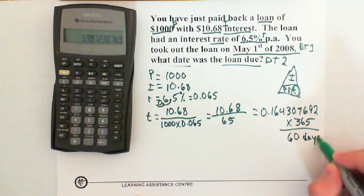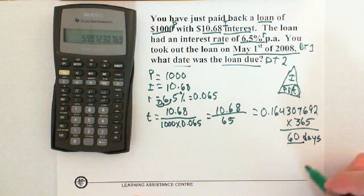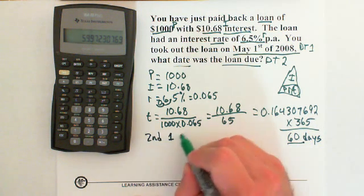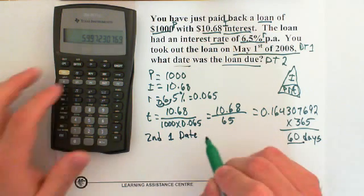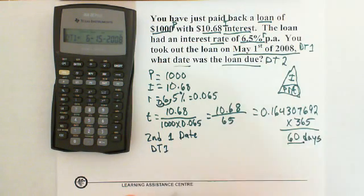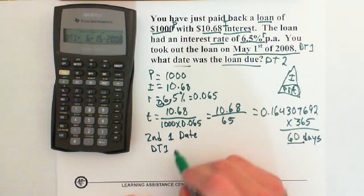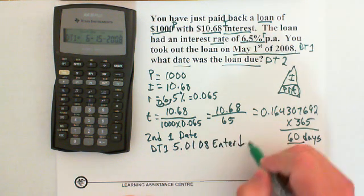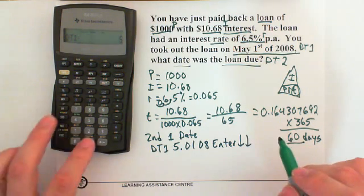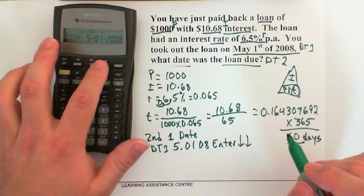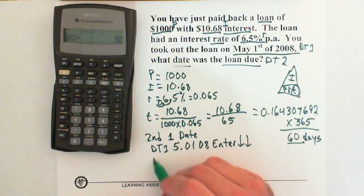So again what's missing is T. So then to solve for T, we're going to take the 10.68 divide by 1,000 times 0.065. So then we multiply the 1,000 times 0.065, so we get 65. And again we have to change this into days, so times 365, and we get 59.9, so we're going to say 60 days. So now we need to change that into date 2, so now we'll go second date, second one.